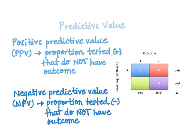Let's pull up our two-by-two table again. Remember: the columns signify the outcome (positive or negative) and the rows signify the screening test results (positive or negative). Reviewing our values: A signifies true positives and D signifies true negatives. We can now fill in B and C — B signifies false positives and C signifies false negatives.